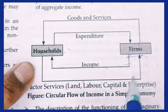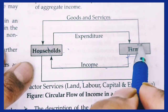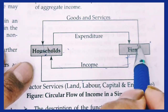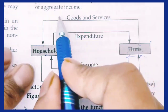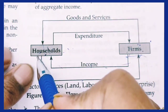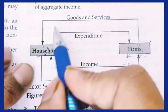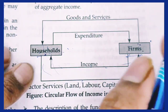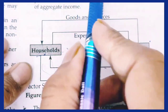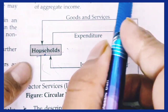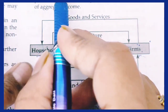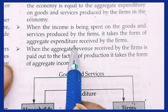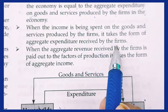Households supply factors of production to firms, and firms provide goods and services back to households — this forms the circular flow. When income is spent on goods and services produced by firms, it becomes aggregate expenditure received by the firms.